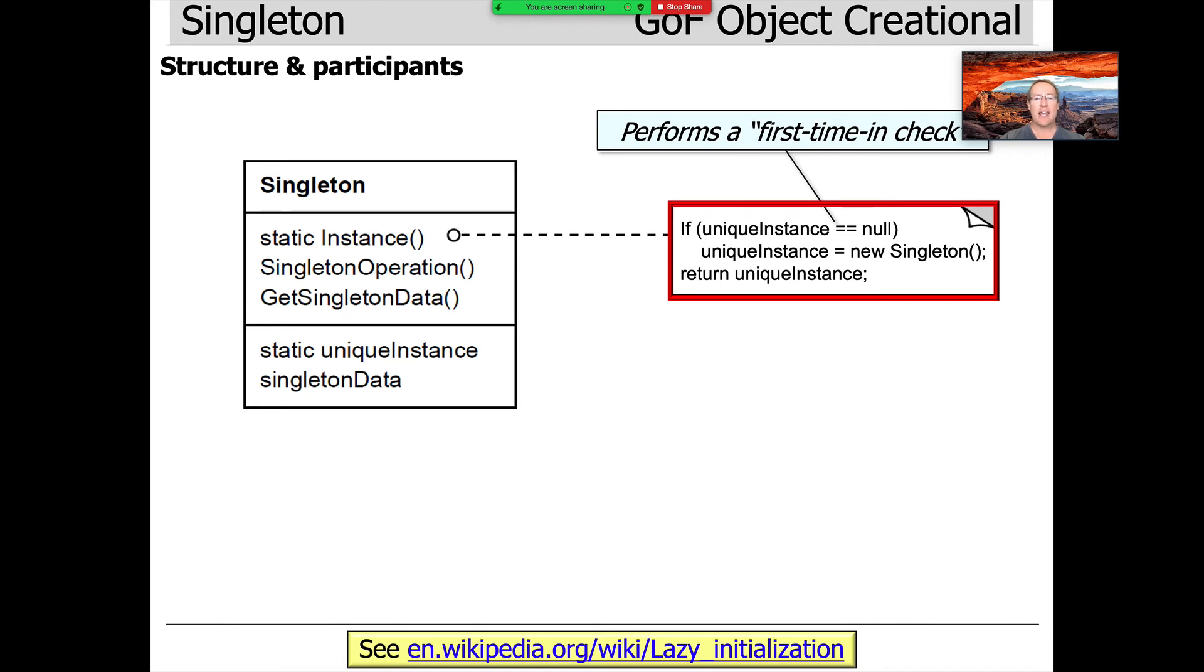In either case, we return the unique instance. So it was either allocated right then using what's called lazy initialization - you do a first-time-in check and initialize it the first time - or it was already initialized before, in which case you just return what was there. Either way, you're returning what was there, but you may have just initialized it for the first time.